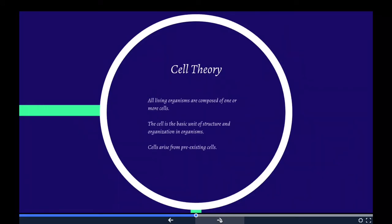I would be shocked if you have to know Robert Hooke, but we do need to know that there are three basic tenets to cell theory. First, all living organisms are composed of one or more cells. Second, the cell is a basic unit of structure and organization in organisms. And third, cells arise from pre-existing cells. Those are the three things we really need to know.